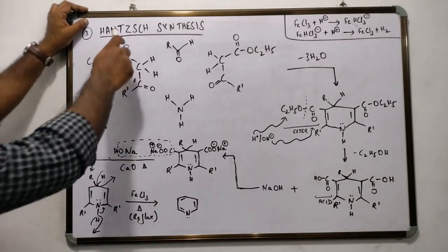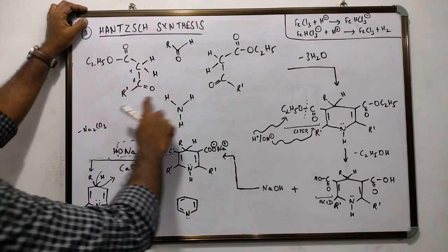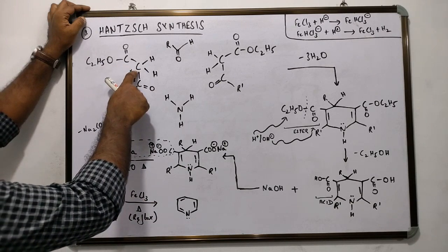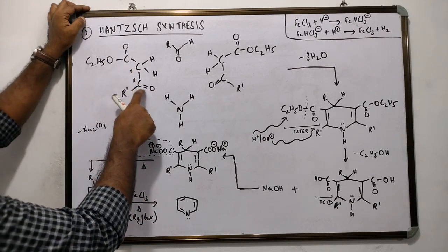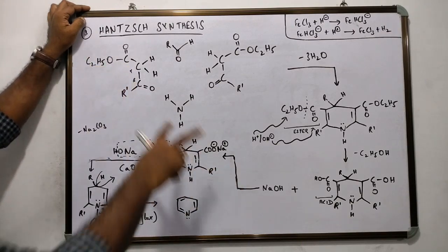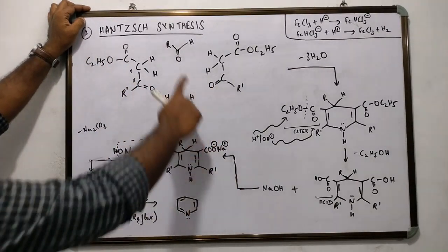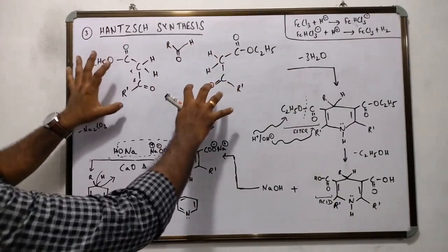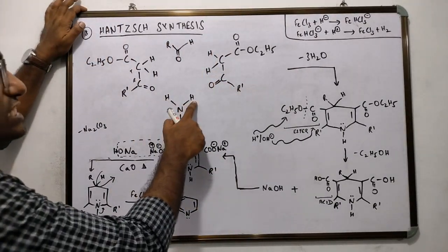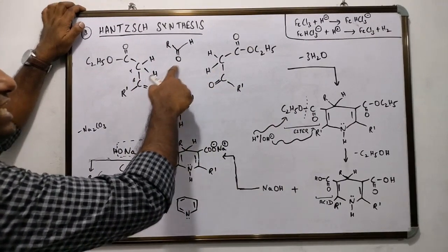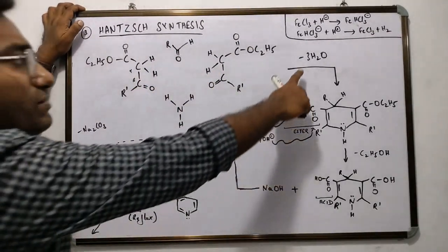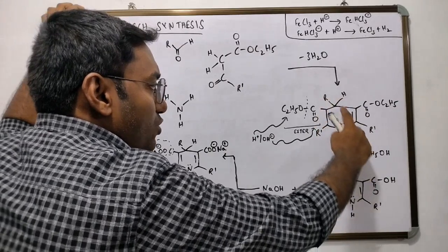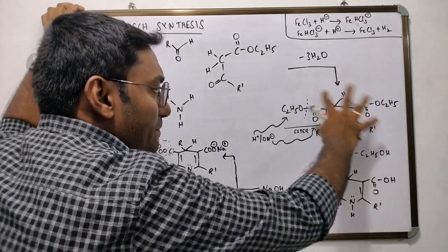Synthesis number 3: Hantzsch Synthesis. Two molecules of beta-ketoester, a molecule of aldehyde, and a molecule of ammonia undergo a condensation reaction in which they lose six atoms of hydrogen and three atoms of oxygen in the form of three molecules of water to form a diester 1,4-dihydro symmetrically substituted pyridine.